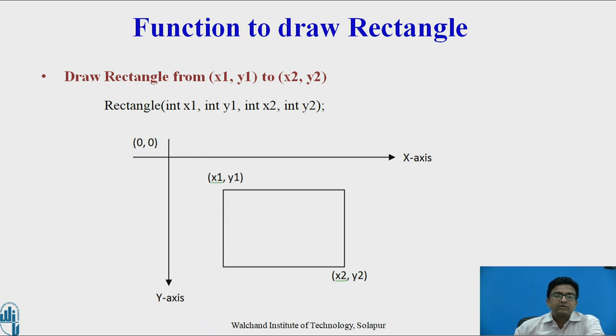Rectangle requires x1, y1 and x2, y2, two points. That is x1, y1 is top right corner and x2, y2 is bottom left corner.